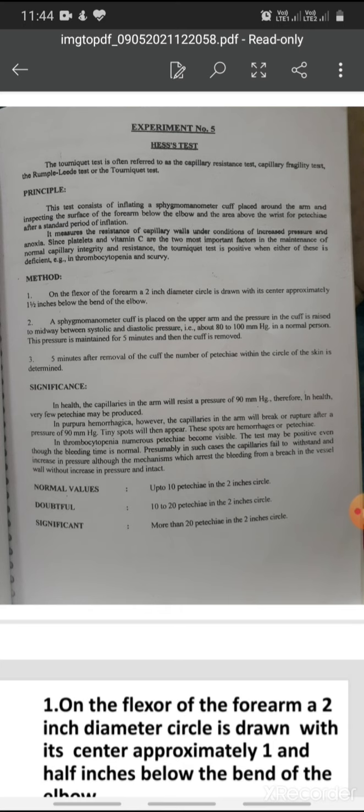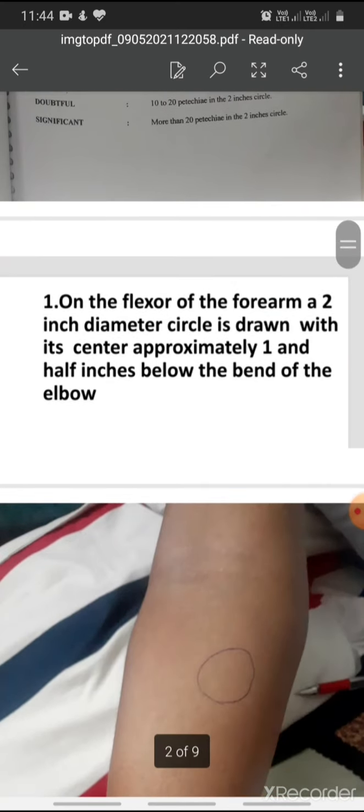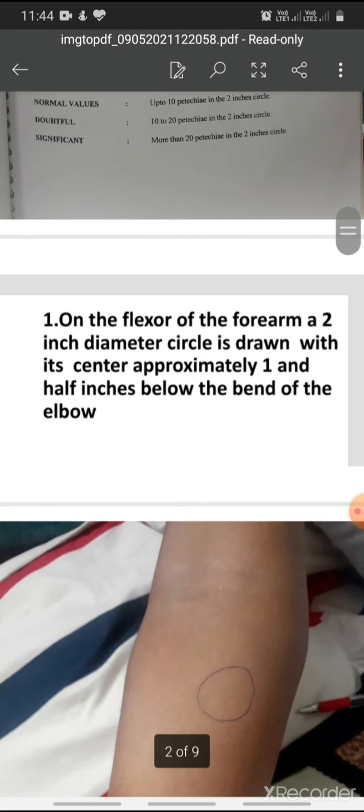The method is: on the flexor of the forearm, a 2-inch diameter circle is drawn with its center approximately one and a half inches below the bend of the elbow.